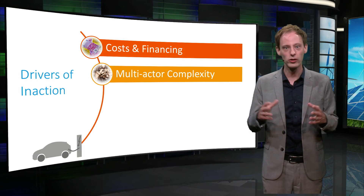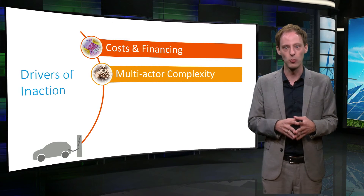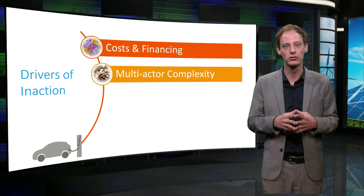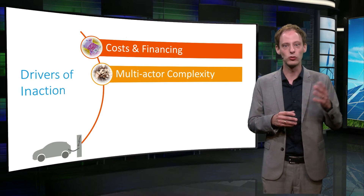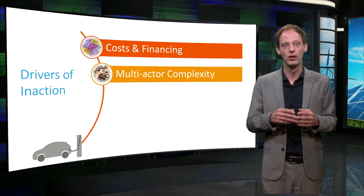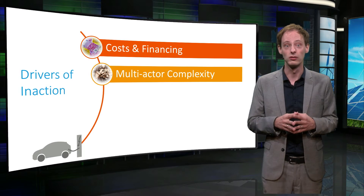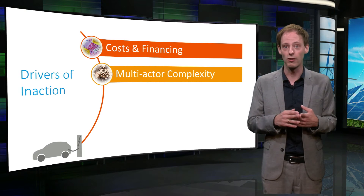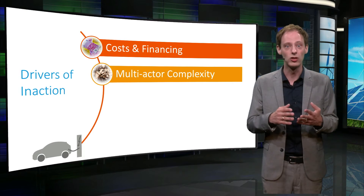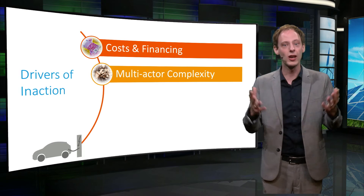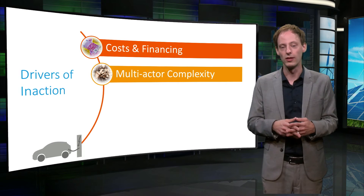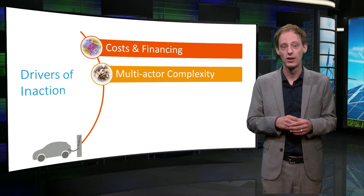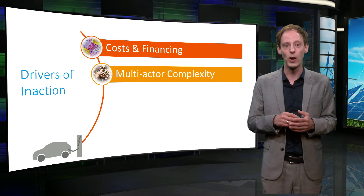But it is not only costs. Just think of all the other actors involved — there is more than the drivers, more than the car manufacturers. For electric vehicles to work, you need a large-scale rollout of charging infrastructure. And how is that going to be coordinated? Think of the parking garages, the employees, governments, electricity network operators — they all need to coordinate the development of such an infrastructure, and that is quite a challenge.